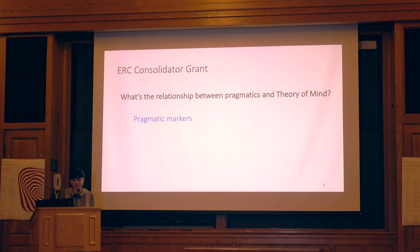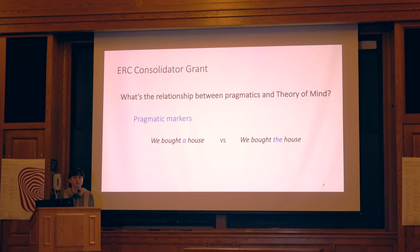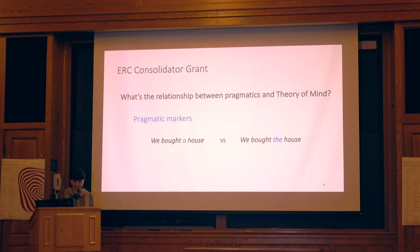But in this case I was thinking of pragmatic markers — to give it a general term — the difference between 'we bought a house' and 'we bought the house'. When I say 'we bought the house', I'm presupposing there's a house we've been talking about before, and it's part of our common ground and I'm signaling that to you. So what's the type of theory of mind that goes into pragmatic markers and what are the implications?